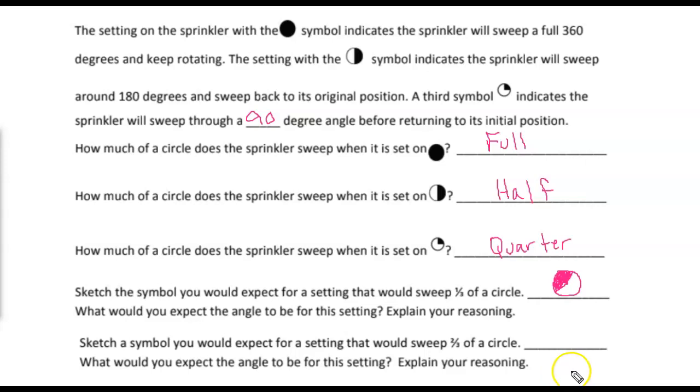Sketch a symbol you would expect to see for a setting that would be two-thirds of a circle. Well, I think it's going to look a lot like that, except I want this piece of it instead of that piece. So if I kind of do the same thing here, but this time I want the two-thirds part instead of the one-thirds part. That's two-thirds of the circle is filled in. So all of those fractions we did back in the fourth and fifth grade will definitely pay off.